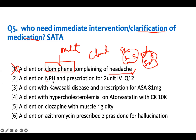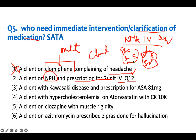Patient two: a client prescribed NPH insulin IV Q12 hours. NPH is an intermediate-acting insulin given twice a day — that checks out. However, NPH is the only insulin type given subcutaneously only, never IV. We don't give NPH IV. We give it subcutaneously. We must question this order.